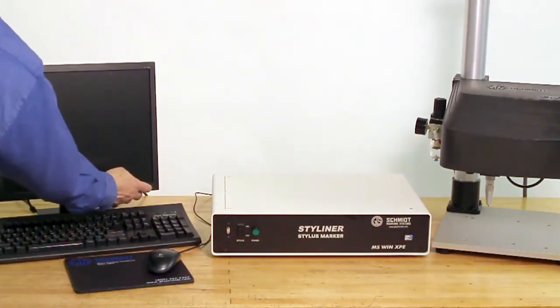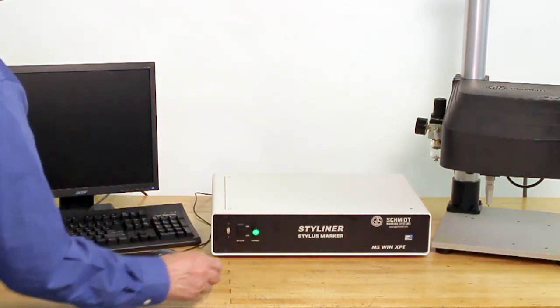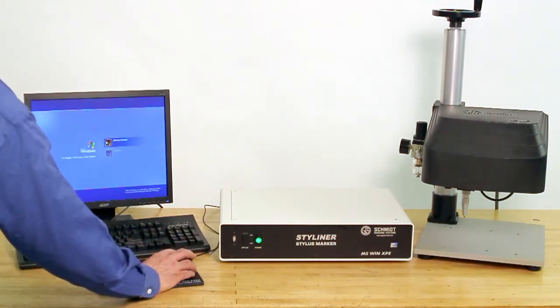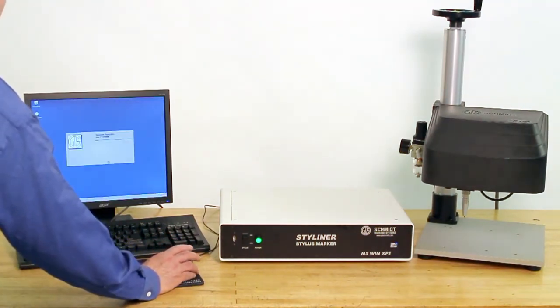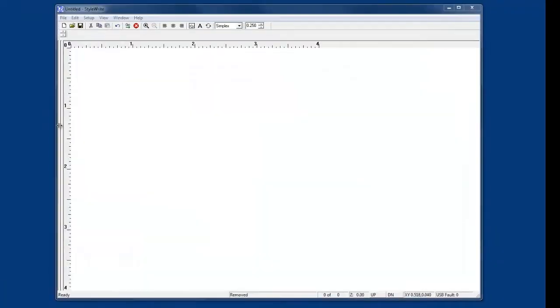Turn on the monitor. Turn on the power to the controller and wait for the computer to boot up. Once the computer is ready, click on the administrator icon to begin. Click and drag open the left window split so you can see the commands sequence window.